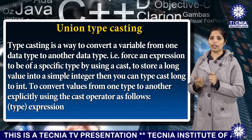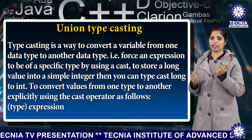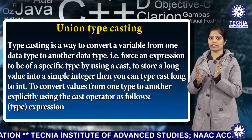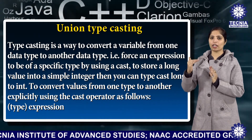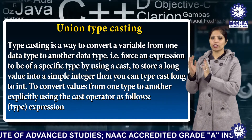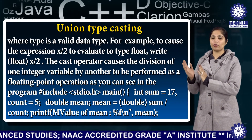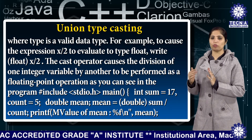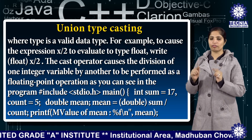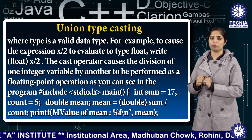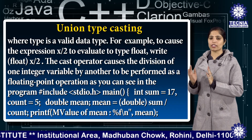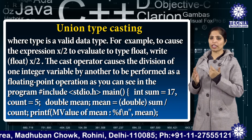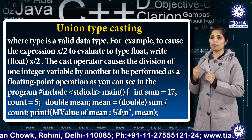To store a long value into a simple integer, you can typecast long to int. To convert values from one type to another explicitly using the cast operator, the syntax is: (type) expression, where type is a valid data type. For example, to cause the expression x/2 to evaluate as type float, we can write (float) x/2. The cast operator causes the division of one integer variable by another to be performed as a floating point operation, as you can see in the program.